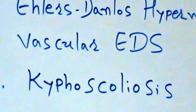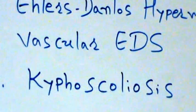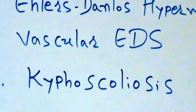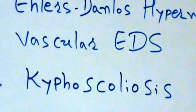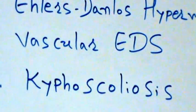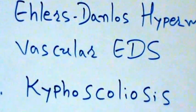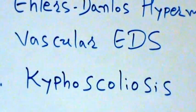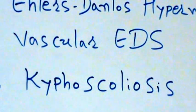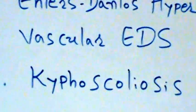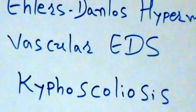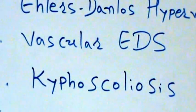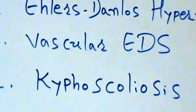Vascular EDS is also referred to as EDS type 4 and Sack-Barabas syndrome. The exact prevalence of vascular EDS is not known. However, based on the number of affected people in the United States, it is estimated that 1 in 200,000 people have the condition. The gene that causes vascular EDS is the COL3A1 gene, or collagen type 3 alpha 1.